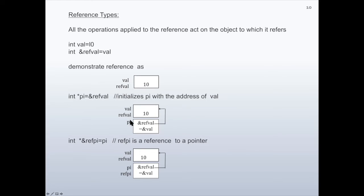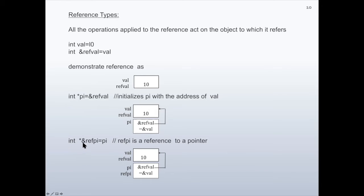So pi has the address of ref1, making it a pointer to that location. This is a declaration of a reference to a pointer.